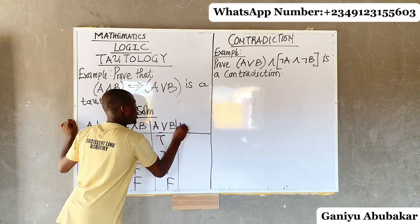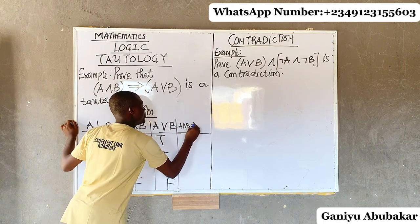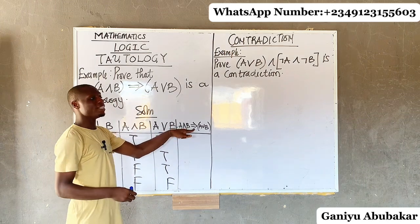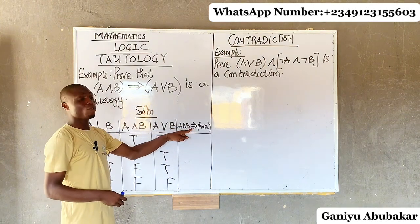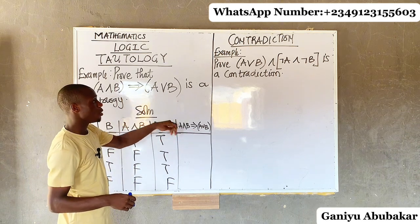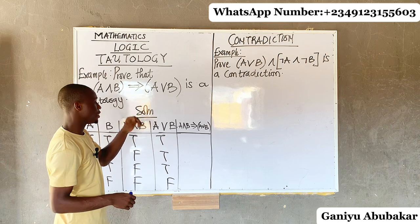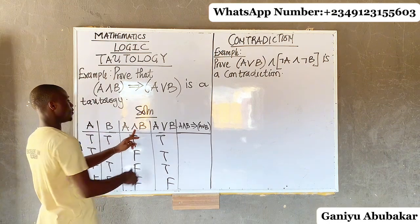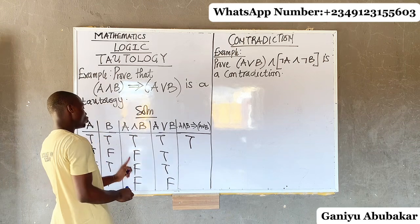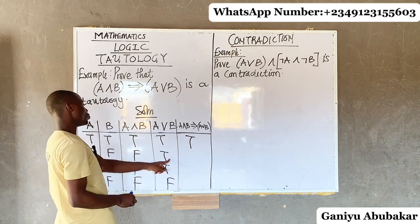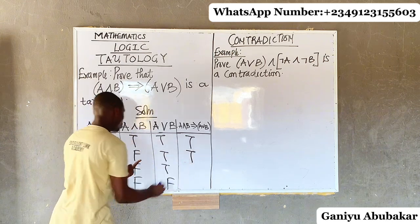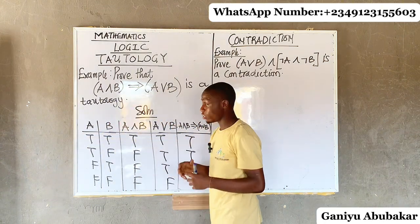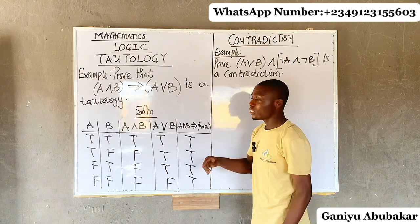Now let's get (A AND B) implication (A OR B). For implication, as I explained last class, if the inputs are the same — like true-true or false-false — the answer is true. For true implying true the answer is true; false implying true becomes true; false implying true becomes true; false implying false becomes true. So this is called tautology.